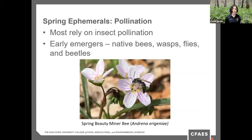Most of these species rely on insects to physically transport pollen rather than wind, which makes sense as these species are really low to the ground. This makes them a very important nectar and pollen source for our early native bees, wasps, flies, and beetles. Some of our native pollinators even specialize in these ephemerals, such as the spring beauty mining bee, which specializes on spring beauties.